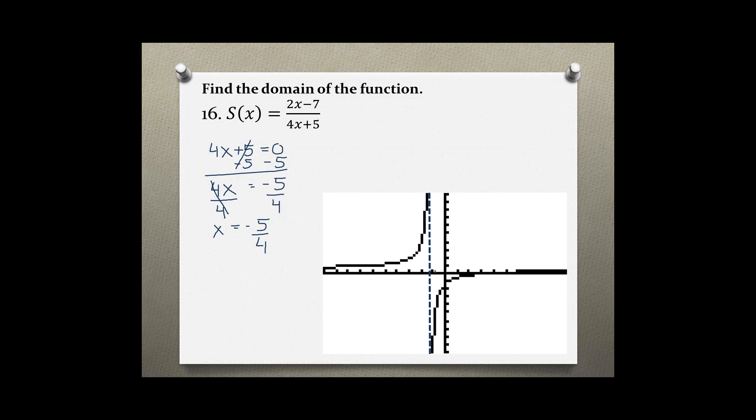So this is the value right here on that dash line that will make the denominator equal to zero, which makes the function undefined. When asked to find the domain, we are looking for all the x values that are a valid number in the function.